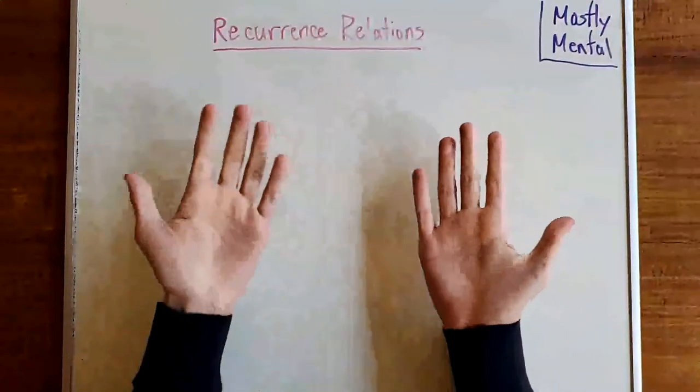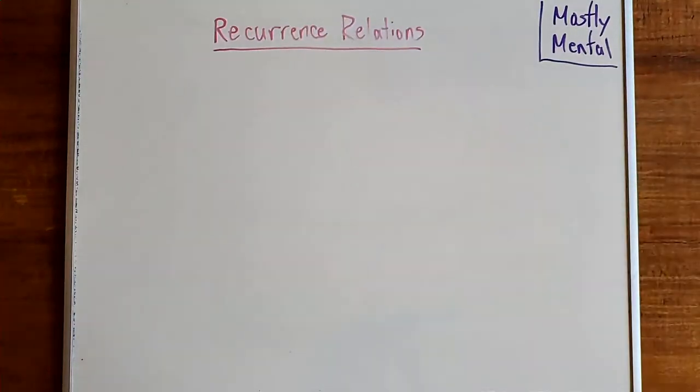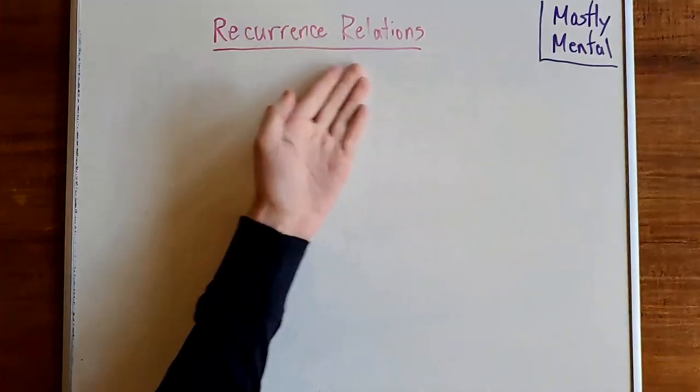Hello everyone, Foxy here, and welcome to Mostly Mental. Last time in this series on combinatorics, we talked about sequences and generating functions. If you're not familiar with those, I recommend checking out that video first at the link up here. Today, I'd like to put them to use in solving recurrence relations.